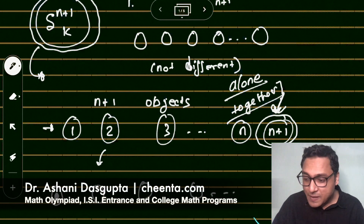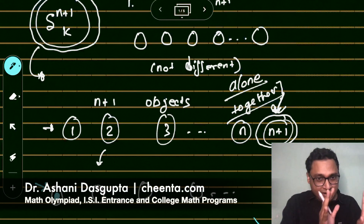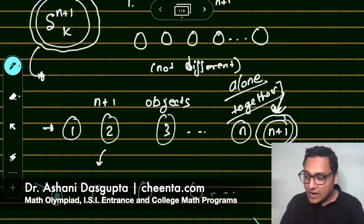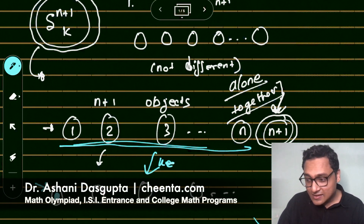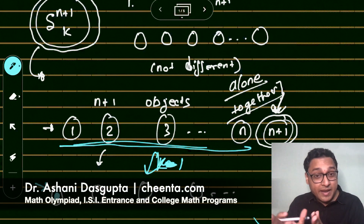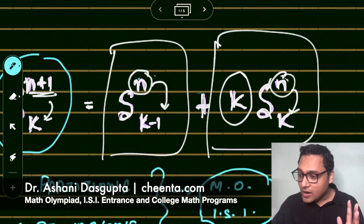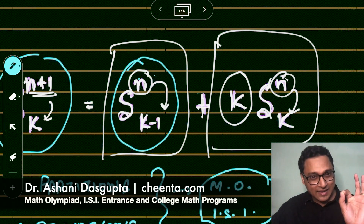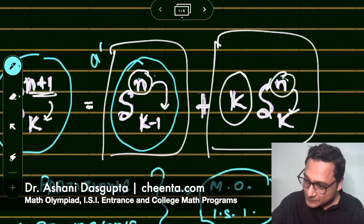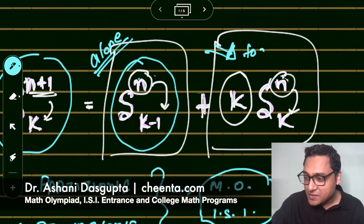Bags are not distinct until we put things in them. Suppose I put the (n+1)th object into one bag and leave it alone. All I need to do is distribute the remaining n objects into the remaining k-1 bags. The number of ways to do that is precisely S(n, k-1) — distribute n objects into k-1 bags. That completes the alone case, so the other term must be the together case.